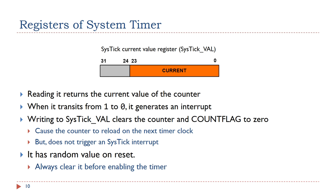Pay attention: the counter has a random value on reset. Therefore, software should always clear the counter to 0 in the initialization code. This can be achieved by writing 0 to the current value register.